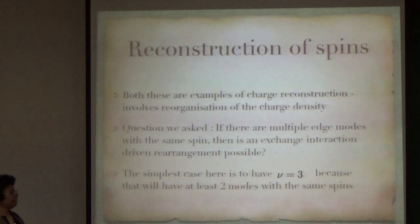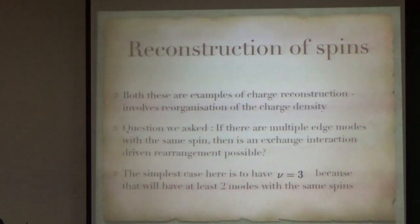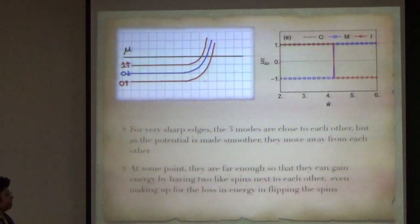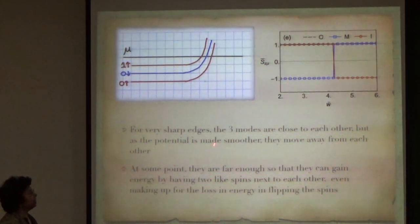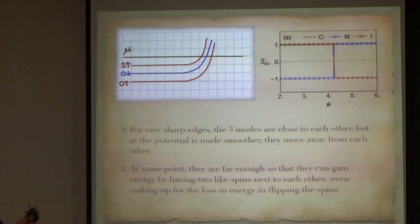The question that we are asking now is that if there are multiple edge modes with the same spin, then is there an exchange-driven rearrangement possible? And the simplest case here is to have nu equals 3 because then you will have at least two modes with the same spin. So, basically the chemical potential we fix at a place where you have 0 up, 0 down and 1 up. And for very sharp edges, the three modes will be very close to each other.